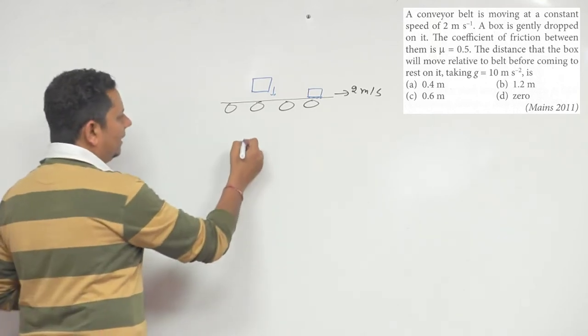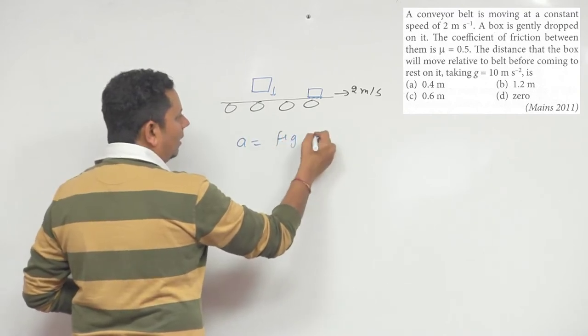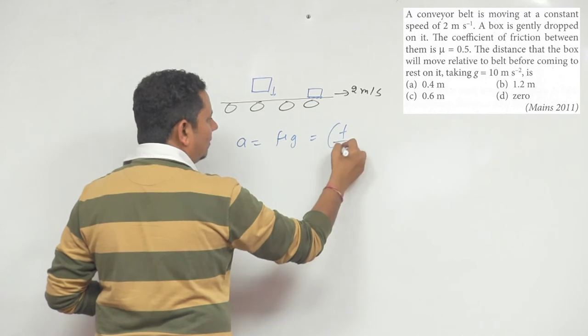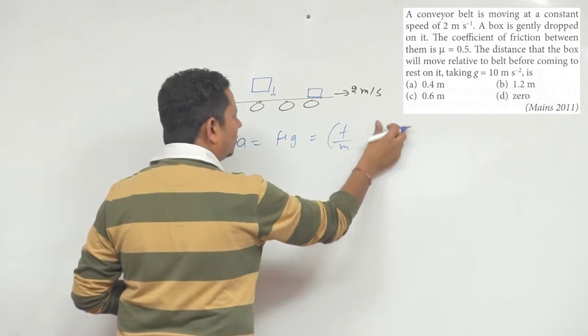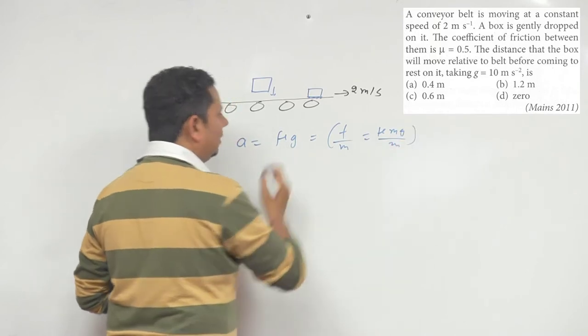In this case, we can write that the acceleration will be mu g. That will be equal to mu mg divided by m, so the value is mu g.